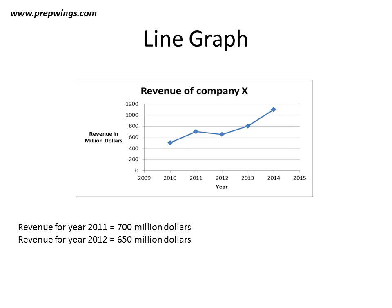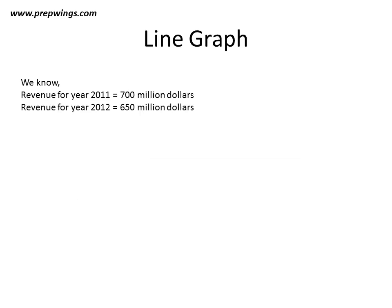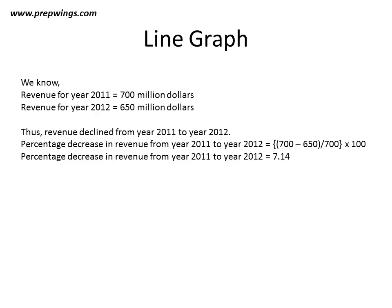Revenue in year 2011 is 700 million dollars from the graph, and revenue for year 2012 is 650 million dollars. The revenue has declined, so there is a percentage decrease happening here. Revenue for 2011 is 700 million and for 2012 is 650 million — thus the revenue declined, and the percentage decrease from 2011 to 2012 can be calculated using the percentage change formula.